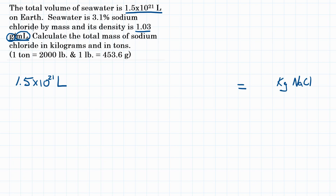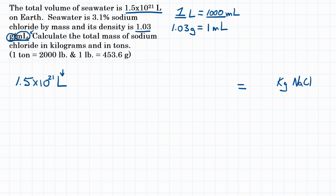The units for this density are in milliliters, and I'm starting with liters. So the first step is to convert liters to milliliters. The relationship is: 1 liter equals 1,000 milliliters. Now we're at milliliters, and we can use the density. The density is 1.03 grams per milliliter, meaning 1.03 grams equals 1 milliliter. Using that relationship, we can get to mass.